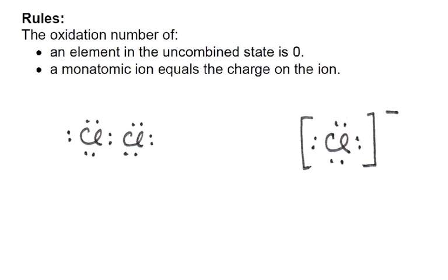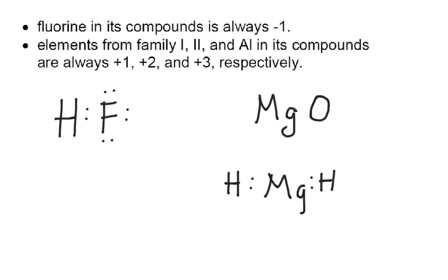Let's go back and look at the rules from chapter 5 and see where they make more sense. The oxidation number of an element in its uncombined state is 0. If we call the oxidation number of chlorine x, then x plus x equals 0, so x must be 0. For a simple ion, if chlorine gains an electron, that ion charge is the oxidation number. Fluorine in its compounds is always minus 1 — being the most electronegative atom, it always gets the electrons, going from 7 to 8 valence electrons, giving it negative 1. Family 1, family 2, and aluminum in their compounds are always plus 1, plus 2, and plus 3 respectively.